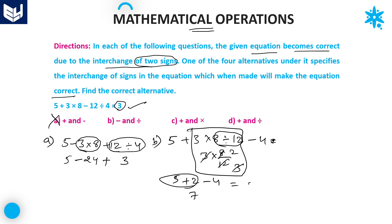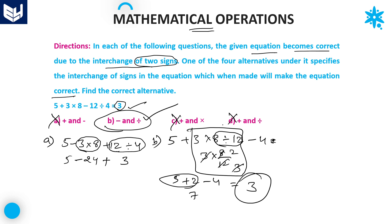So we have 5 + 2 - 4. That is 7 - 4 = 3. We got the same result as the given equation. Therefore we need to interchange the signs minus and division. Once you got the answer, there is no need to check options C and D — directly you can eliminate those. If you interchange minus and divided-by, the equation will be correct. Therefore the required answer is option B.